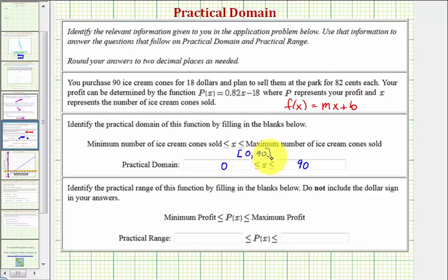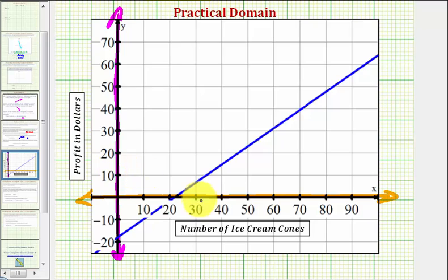Now let's go back to our graph. Now that we know the practical domain, let's go ahead and indicate this on the x-axis. The practical domain is the closed interval from zero to 90. So of course, if we restrict the domain, it's going to affect the range.